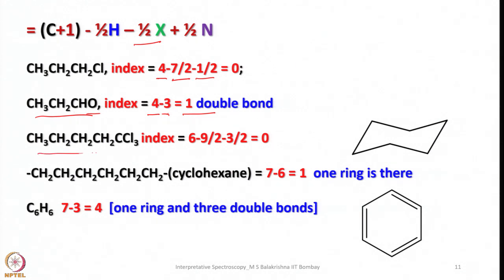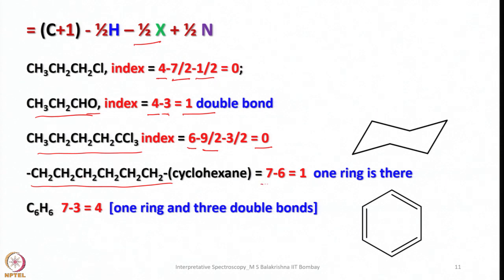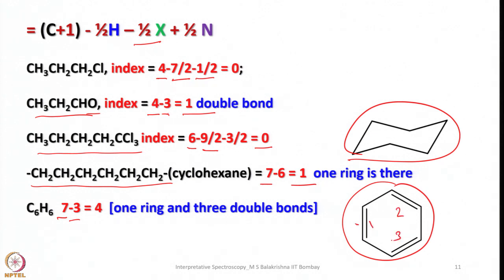For cyclohexane: C+1 = 7, 12 hydrogens give 12/2 = 6 — IHD = 1, indicating 1 ring. For benzene C6H6: C+1 = 7, 6 hydrogens give 3 pairs — IHD = 4, corresponding to 1 ring and 3 double bonds. This is how we calculate the hydrogen deficiency index and use molecular formula to arrive at the right structure of the molecule once fragment data and the parent ion peak are obtained from the mass spectrum.